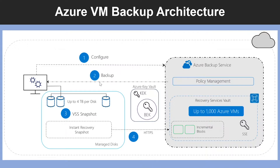When it's time for the backup or the backup policy, Microsoft sends a command to the Azure backup extension, and then Azure backup orchestrates a VSS snapshot. Once the snapshot is available, it goes to your local VM storage as an instant recovery snapshot, which you can quickly recover from as it is in your VM storage.